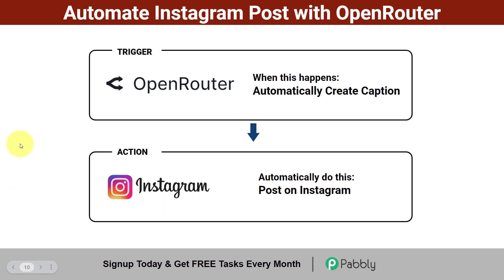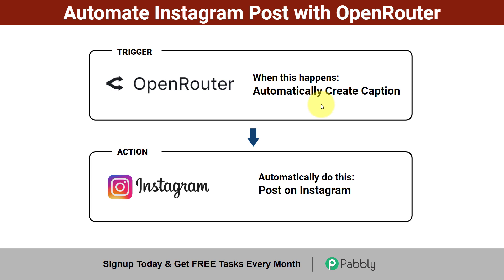Today I'll show you a very interesting automation using which you can automate your Instagram post with Open Router. Open Router is an amazing AI application using which you can automatically create captions for your Instagram post, and you can also post the same caption automatically on your Instagram handle. Want to learn how you can also automate your Instagram post?